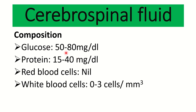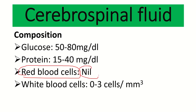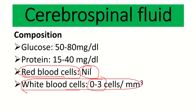The normal CSF composition is: glucose 50–80 mg/dL, protein 15–40 mg/dL, red blood cells nil, and white blood cells 0–3 cells per cubic millimeter. The fact that red blood cells are absent from the CSF is important, as is the white blood cell count of 0–3 per cubic millimeter. Also note that glucose is usually higher than protein in the CSF.